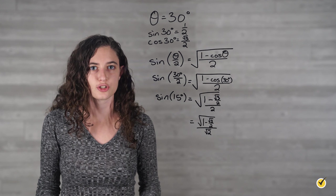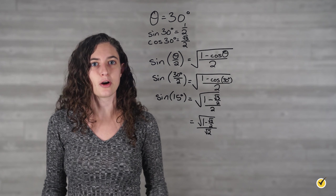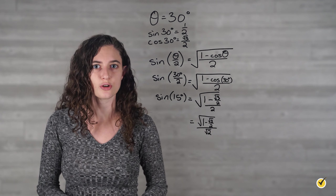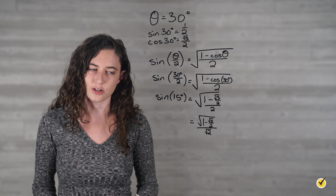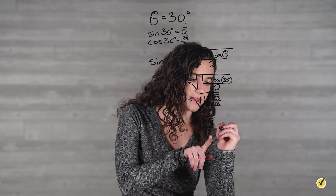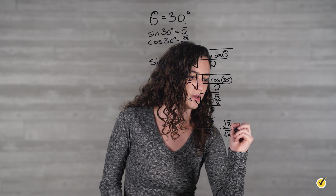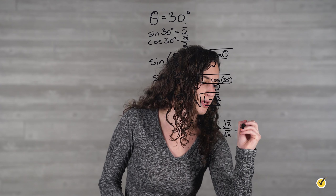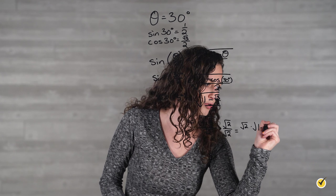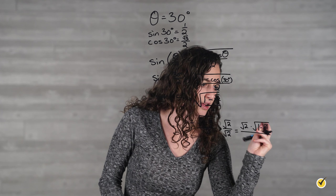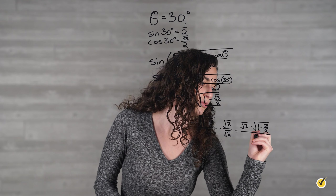We have a radical in our denominator, so we need to rationalize it. Since the radical is a monomial, we multiply the top and bottom of our answer by the denominator in order to make our new denominator an integer. So we're going to multiply by the square root of 2 over the square root of 2. Our numerator will be the square root of 2 times the square root of 1 minus the square root of 3 over 2, and our denominator will be the square root of 2 times the square root of 2, which is 2.